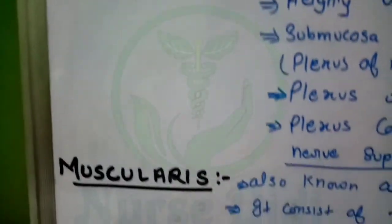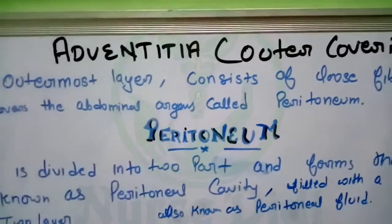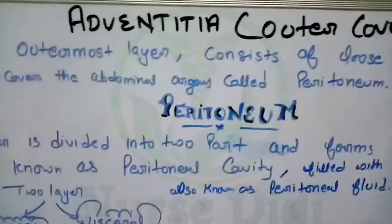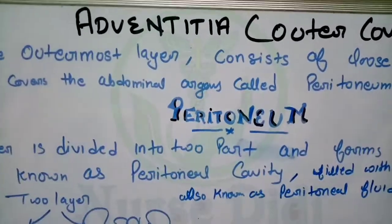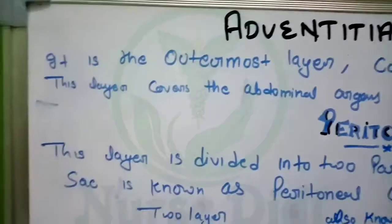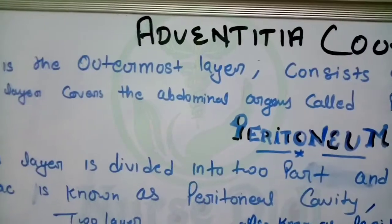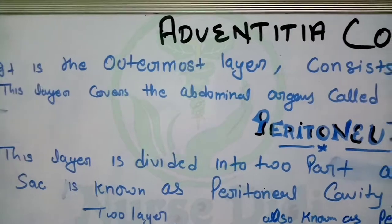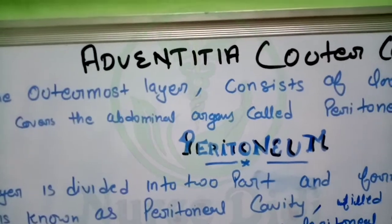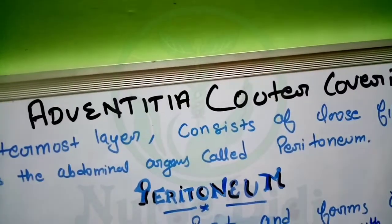We have covered the mucosa and muscularis layers. Now we will study our 4th layer. This is the last layer - the outermost and superficial layer. Adventitia and serosa are two names for this outermost layer. It consists of loose fibrous connective tissue. This layer covers the abdominal organs and is called the peritoneum.